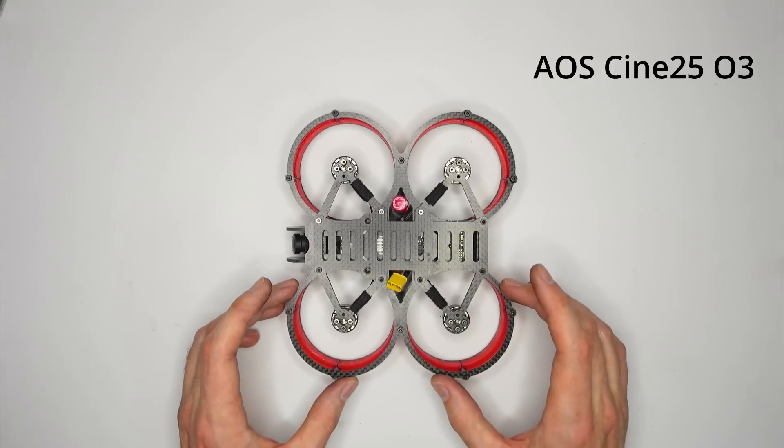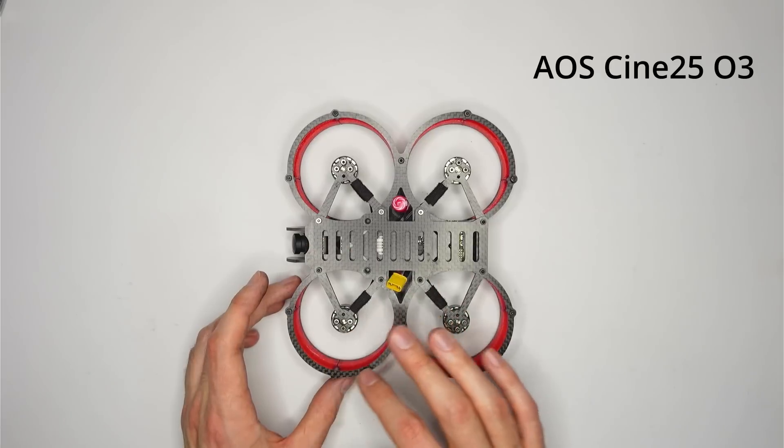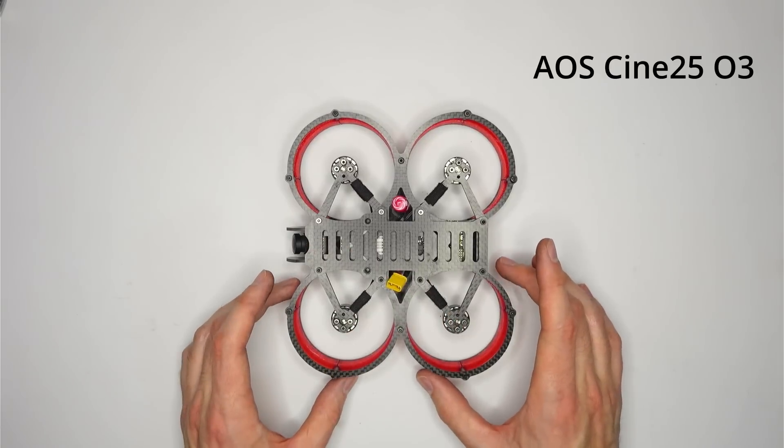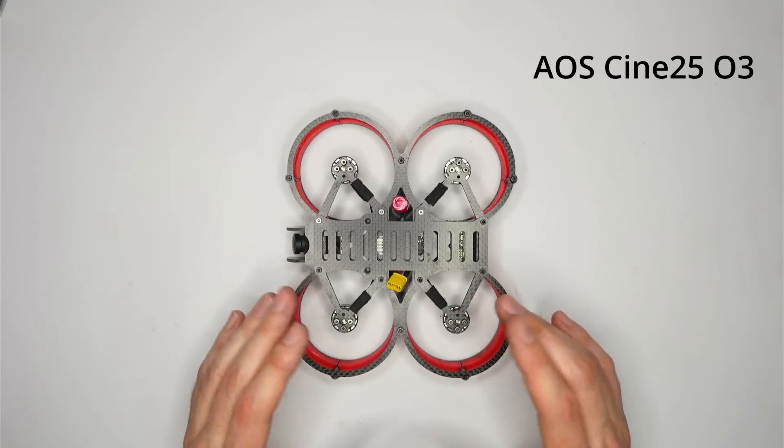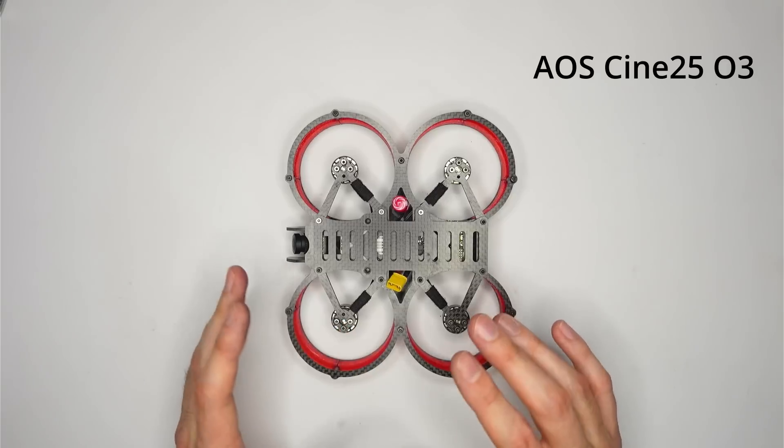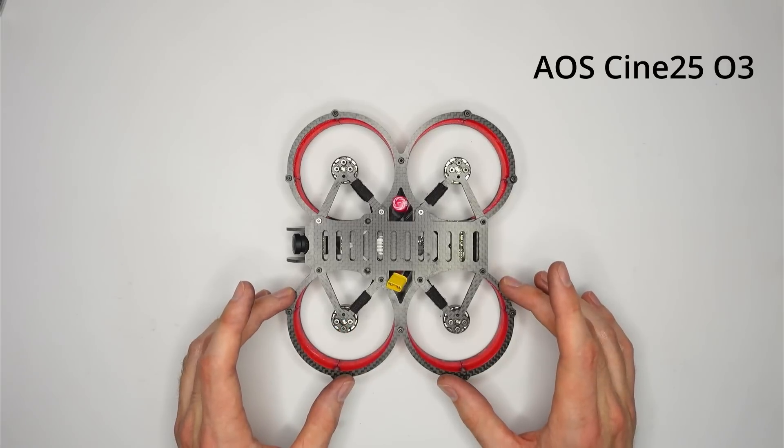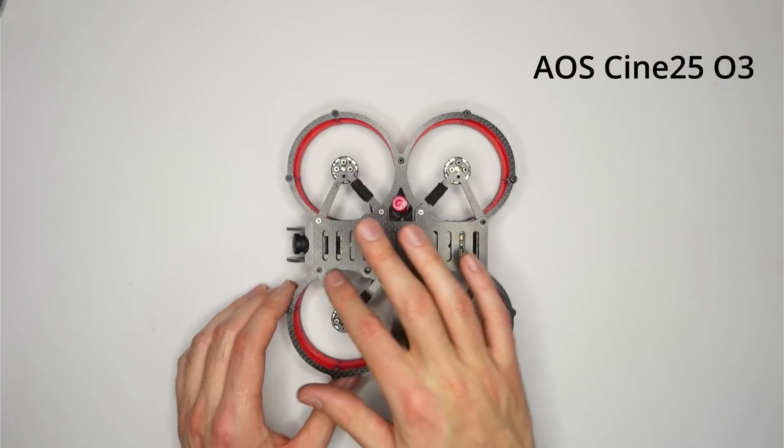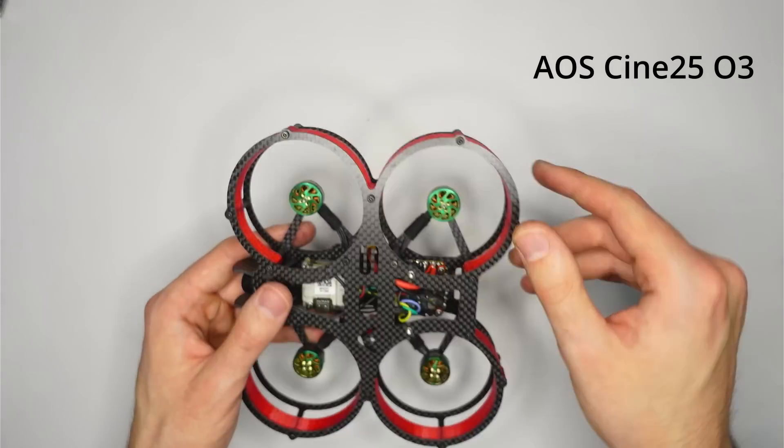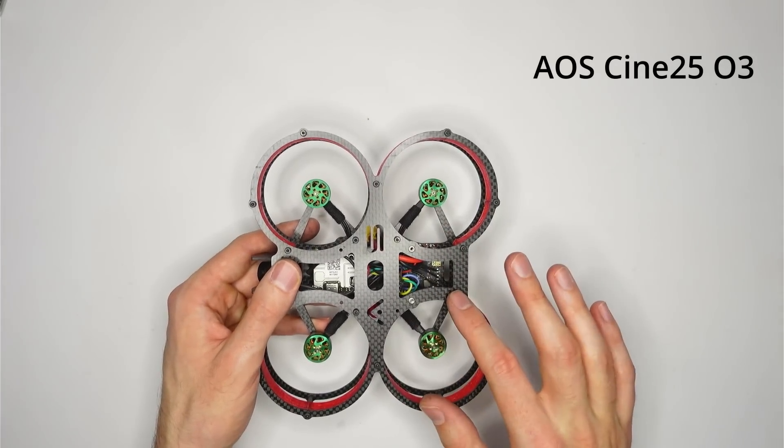Similar to the Cine 3.5, you have carbon fiber prop guards, and the option to print your own modular ducts, so that you can adjust the duct drag for different types of flying. Again, we've got GoPro mounting up front at the top, and also in the rear for chase shots as well.